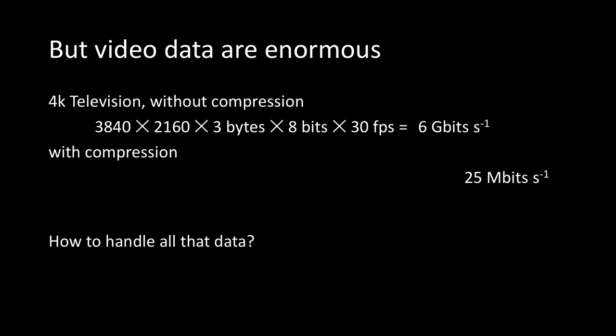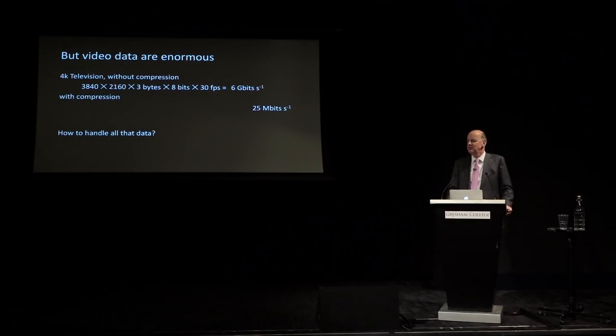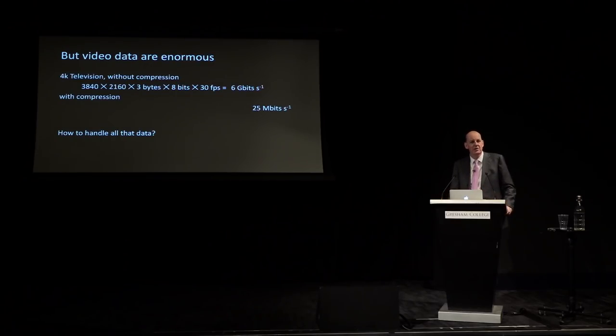There's another issue. A 4K television signal — the kind your average iPhone now produces — multiply the resolution by bytes, by bits, by 30 frames per second, and you get around 6 gigabits per second. That's a horrendous amount of data, very tricky to transmit. This lecture is being live-streamed and we are certainly not transmitting at 5-6 gigabits per second. Even with compression, 25 megabits per second is a real challenge.